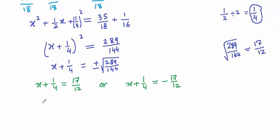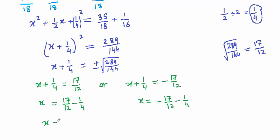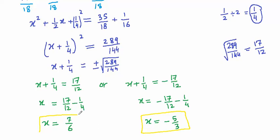We move 1/4 to the other side in both cases. For the first case: x = 17/12 - 1/4, which simplifies to 7/6. For the second case: x = -17/12 - 1/4, which simplifies to -5/3. These are the two roots of the equation obtained by the completing the square method.